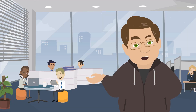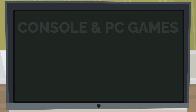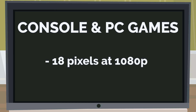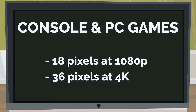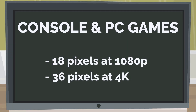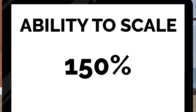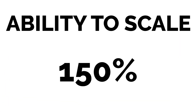Ensuring your default size isn't small is a good first step. For console and PC games, the default text size should be no smaller than 18 pixels at 1080p, or 36 pixels at 4K. Text also needs the ability to scale up to at least 150% without loss of content, functionality, or meaning.